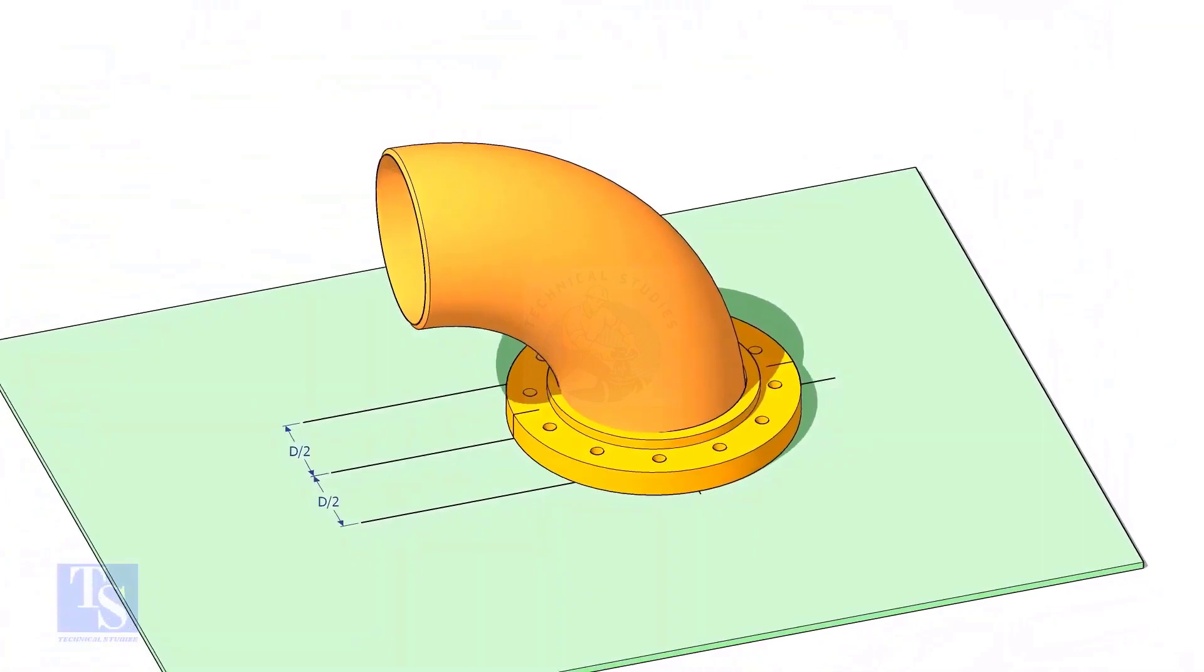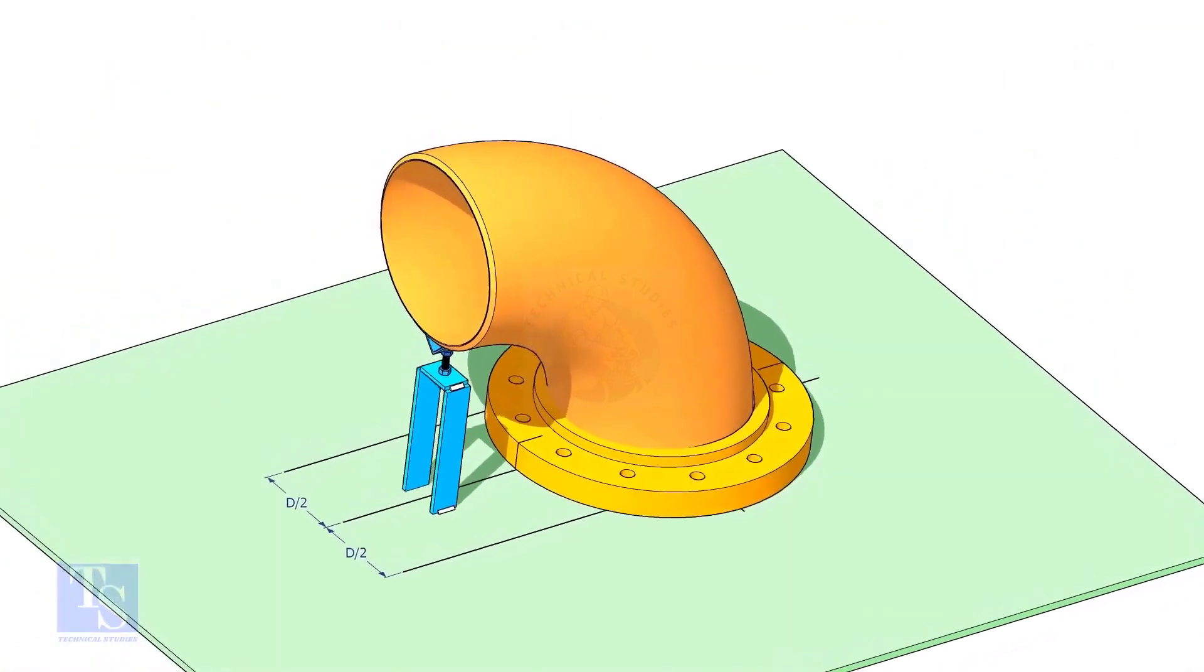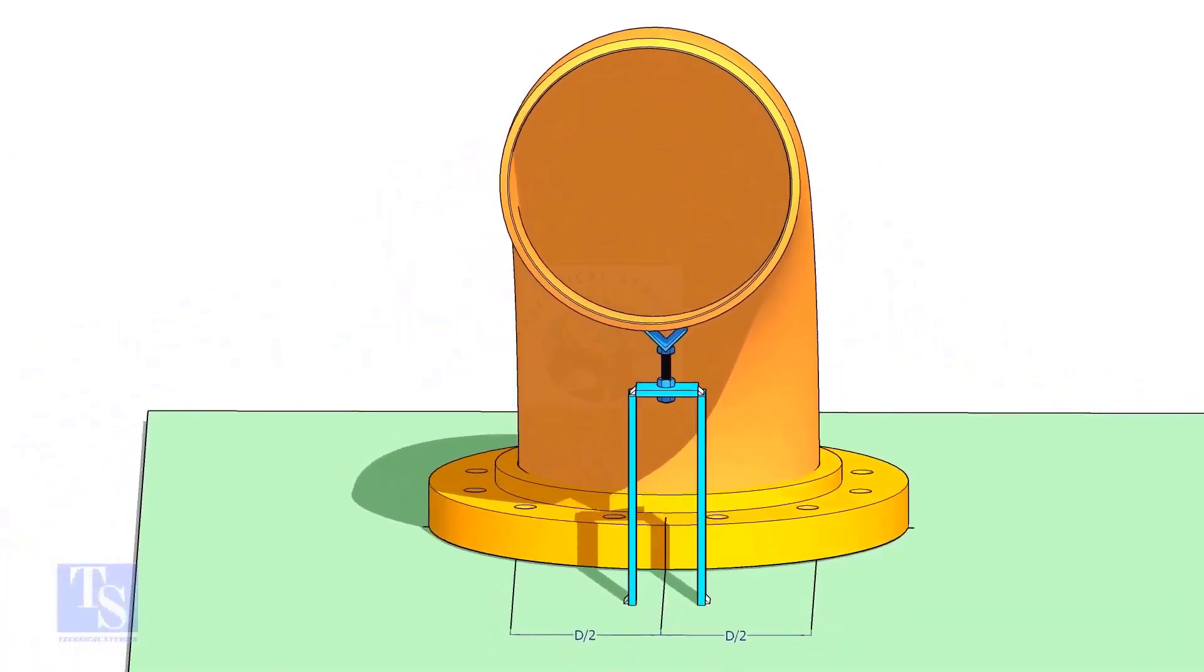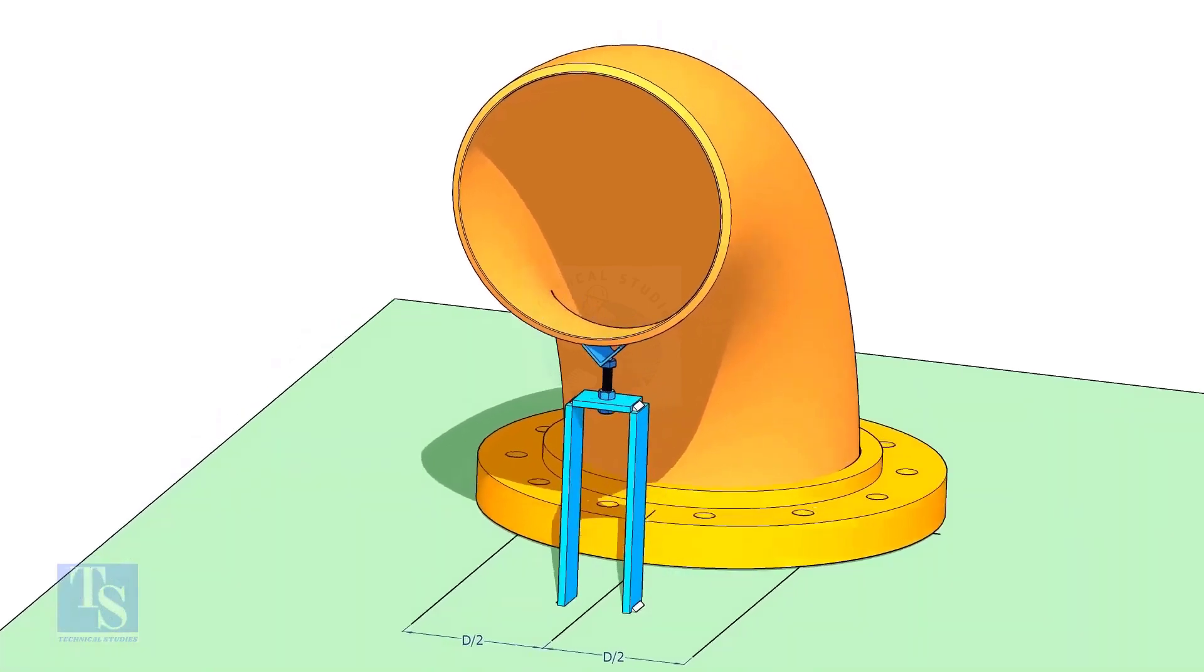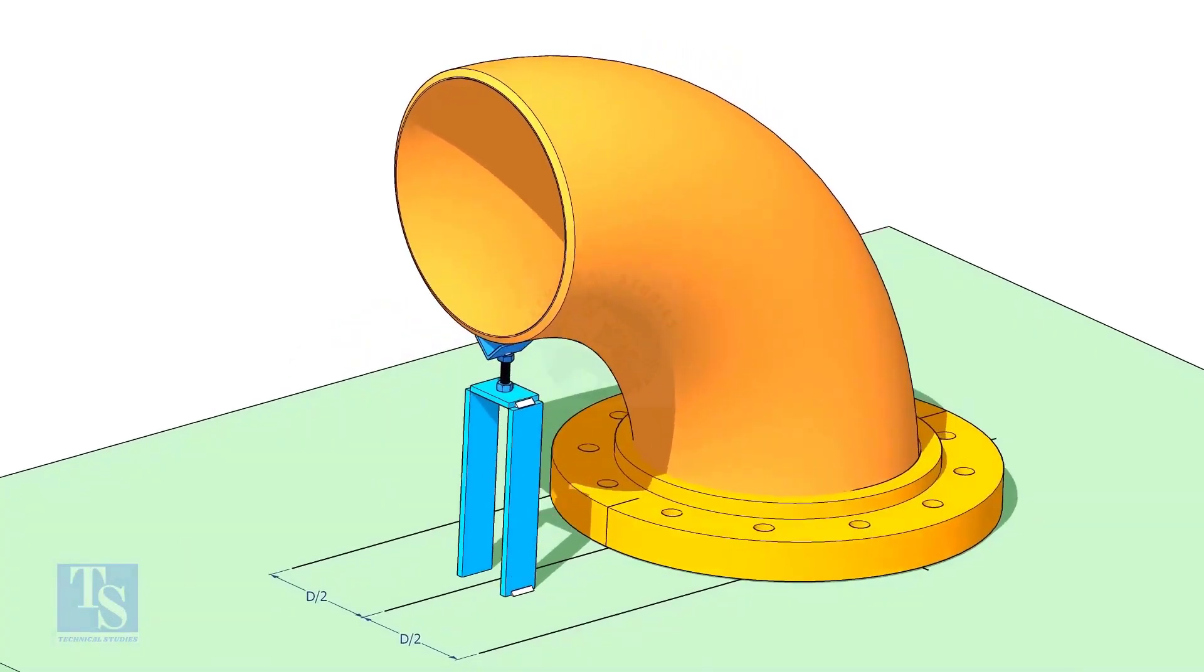Put the elbow in the flange. If required, tack weld the screw jack below the elbow face as shown. Adjust the height of the bolt and level the face of the reducer.